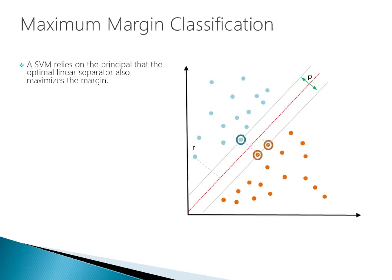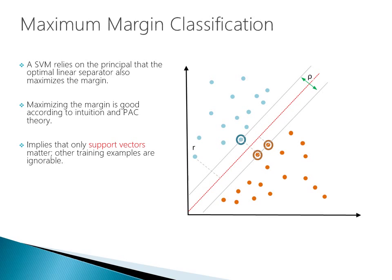The margin P of the separator is the distance between the support vectors, and you have a support vector on both sides of the hyperplane. A Support Vector Machine relies on the principle that the optimal linear separator also maximizes the margin. We want to maximize the gap from our hyperplane to the first data points it sees — the support vectors — and make that gap as large as possible. This implies that only support vectors matter; all other training examples are ignorable. The most important training points are these support vectors, and they are what defines this hyperplane.